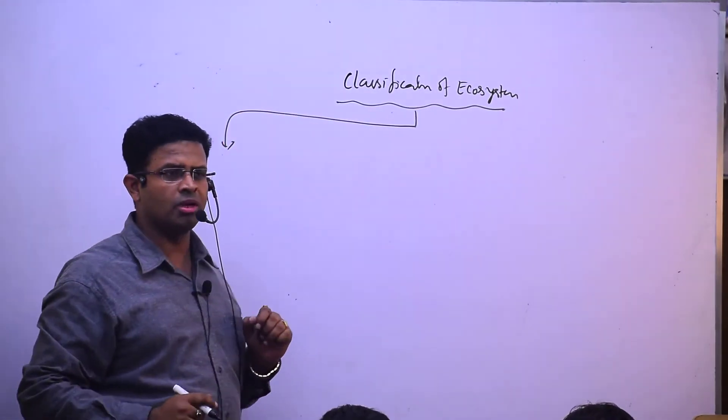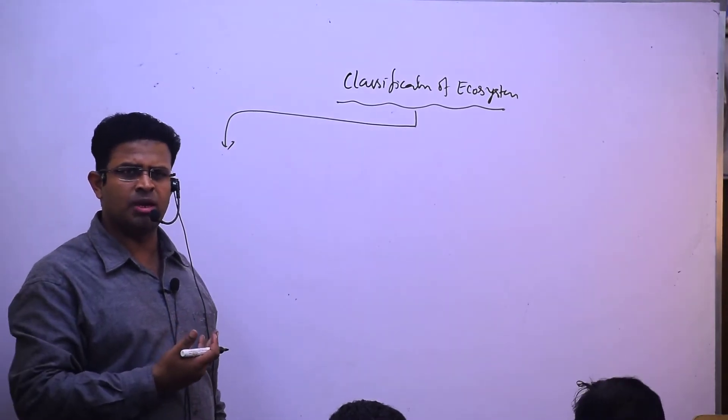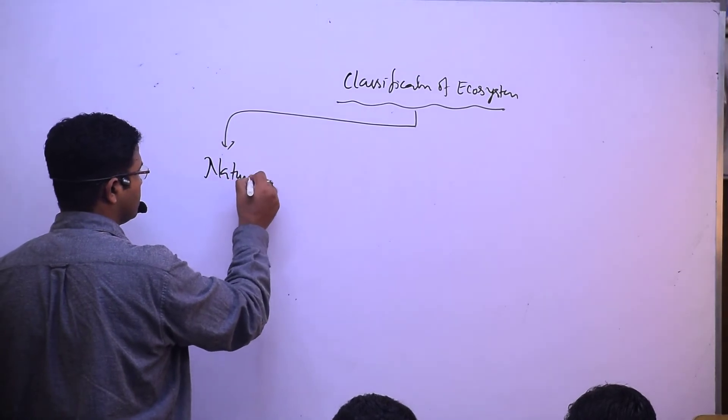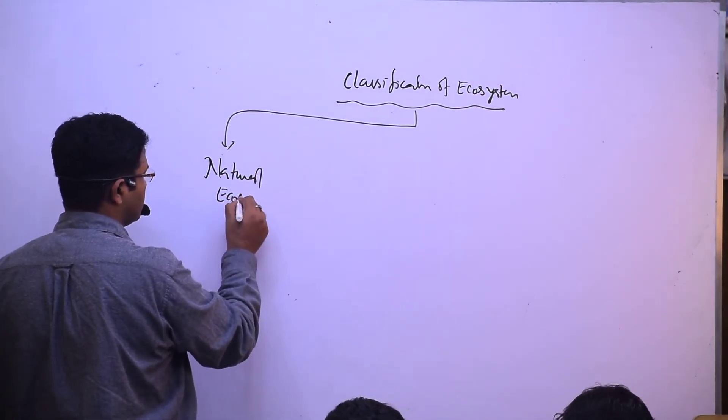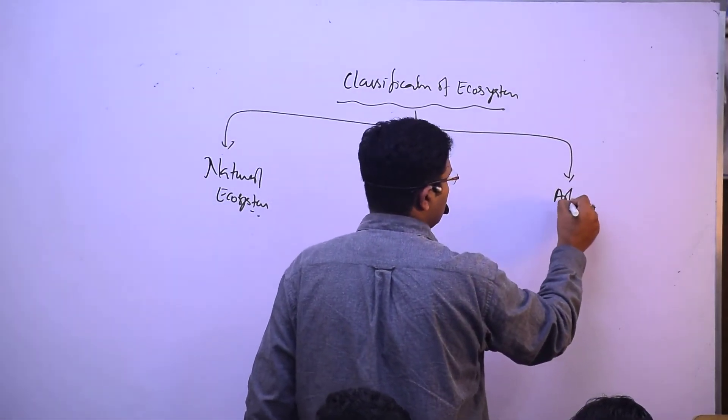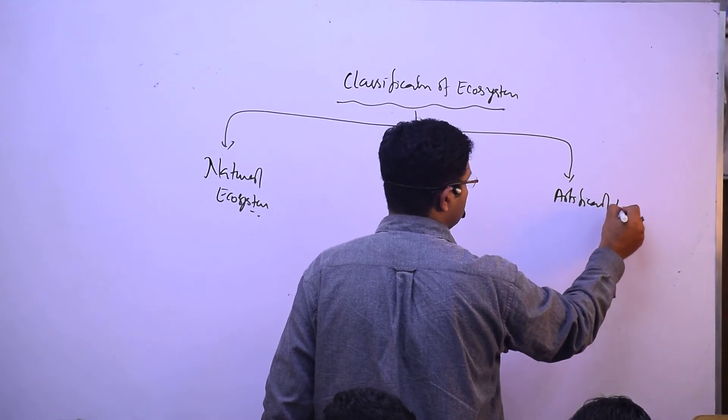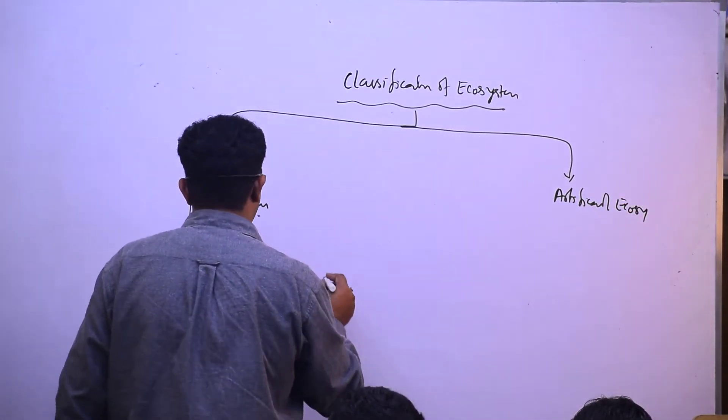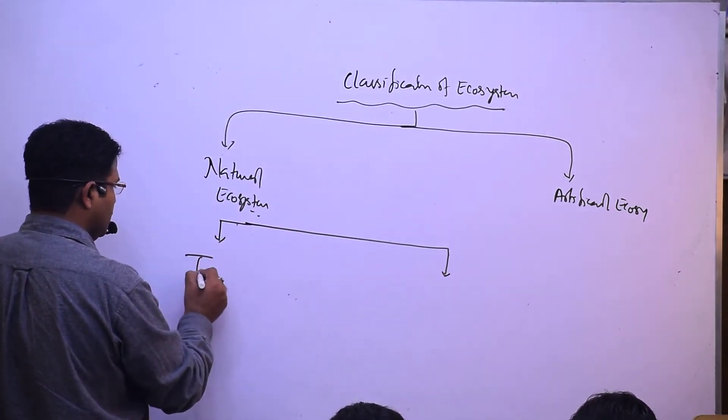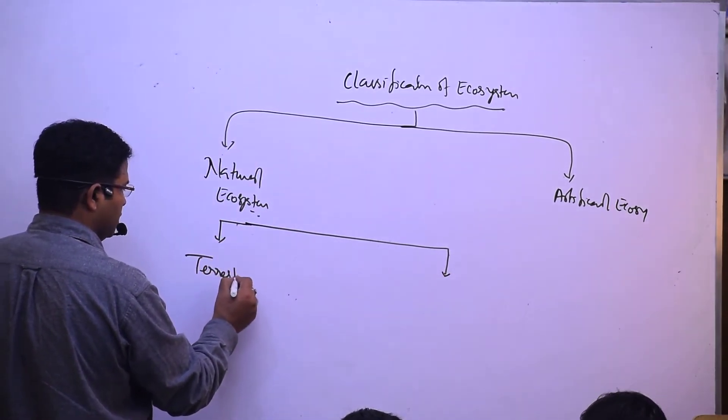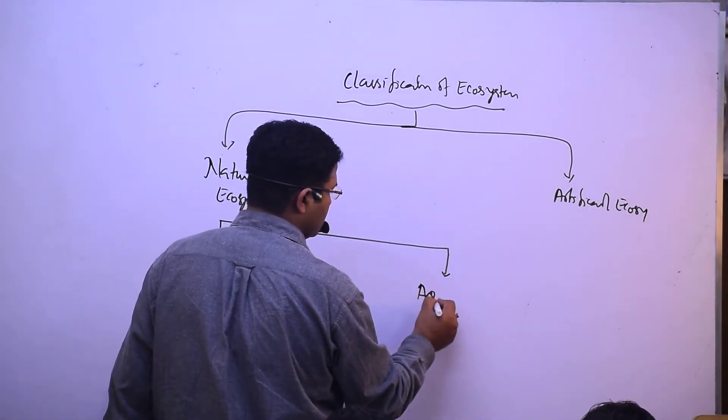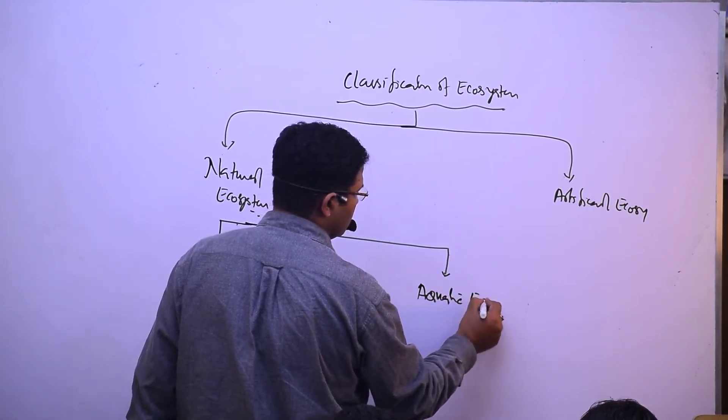C for component, C for classification. Components are biotic and abiotic. Classification: natural ecosystem and artificial ecosystem. Natural ecosystem has been divided into two - terrestrial ecosystem and aquatic ecosystem.